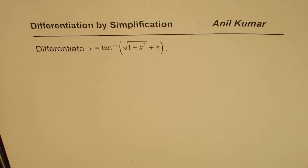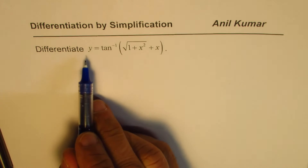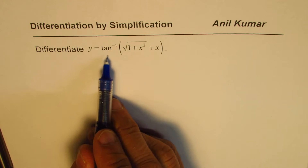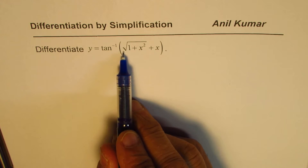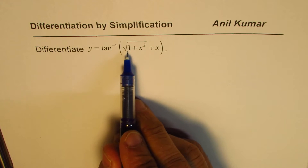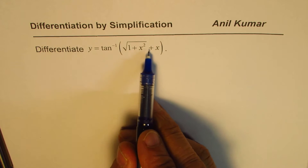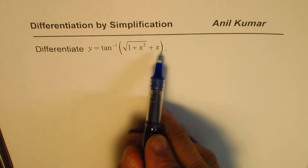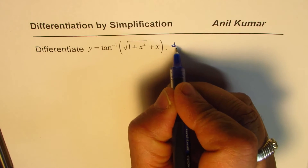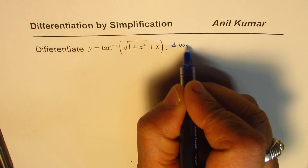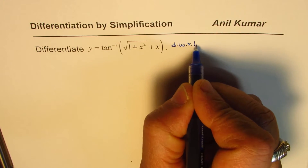I'm Anil Kumar, sharing with you a very interesting question on differentiation of trigonometric inverse functions. We need to differentiate y equals to tan inverse of square root of 1 plus x squared, plus x, with respect to x.